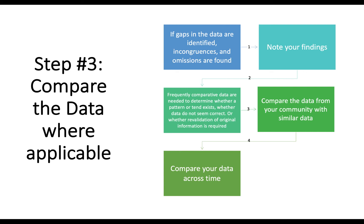Note any incongruences and omissions found. For comparative data needed to determine patterns or trends, let me give you an example: if your infant mortality rate is 12 per 1,000 live births, how does it compare with the nearest city, across the state, and nationally? You can also compare among races to detect disparity and inequitable distribution. Compare your data over time to detect trends — if data are available for several years, you can compare to discover whether a problem is improving, increasing, or decreasing.